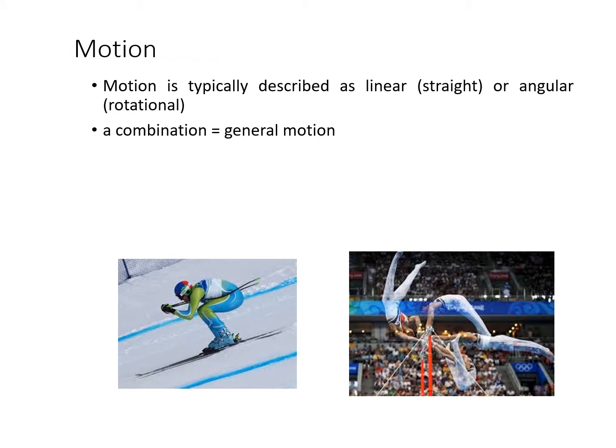Newton's laws of motion mean we must start with the term motion. Motion is a complex concept, but here we look at it simply as a body's change in position over time. It can be described as linear — all body parts moving in a straight line, like a downhill skier — or angular, which is movement about an axis, such as the giant swing on a gymnastics horizontal bar.